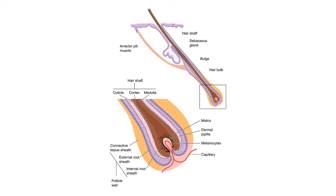Let's start off with hair. Hairs are located on all parts of the body except for the palms of the hands, soles of the feet, lips, and external genitalia, including the nipples. Structurally, hairs emerge from a follicle which is embedded deep within the skin. The follicle is actually made up of stratum basale.